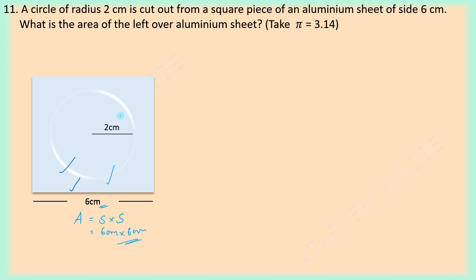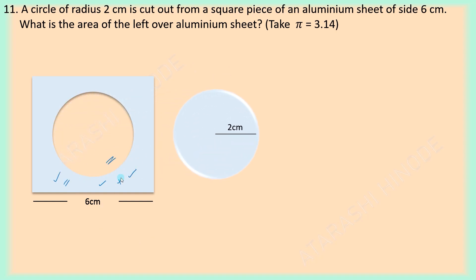Now what is the formula for finding the area of a circle? We know it is π r², that is equal to π × r × r. R is the radius, and it is given as 2 cm. Substituting these values we can find the area of the circle, and from the area of the square, when we subtract the area of the circle, we get the area of this shape.